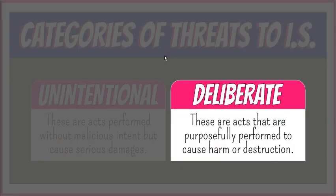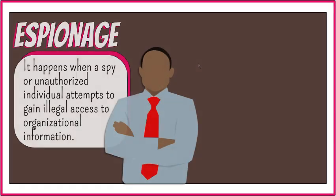Now let's talk about the second major classification of threats against information systems: deliberate threats. These are acts that are purposely performed to cause harm or destruction. Here is a list of common examples of intentional threats.